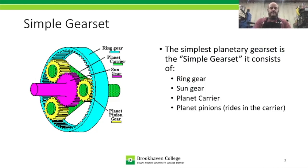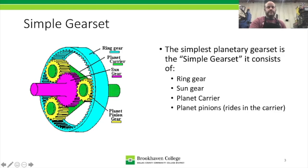The simplest gear set is called the simple gear set, and it consists of the ring gear, the sun gear, the planetary carrier, and the planet pinions. You can see them labeled in the illustration. The ring gear is sometimes called an internal gear or an annulus gear — it goes all the way around and only has teeth on the inside. The pinions are called planet pinion gears.